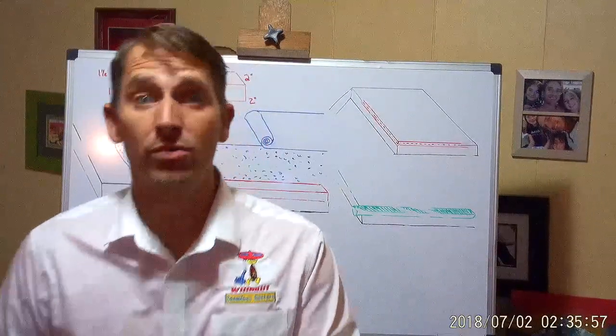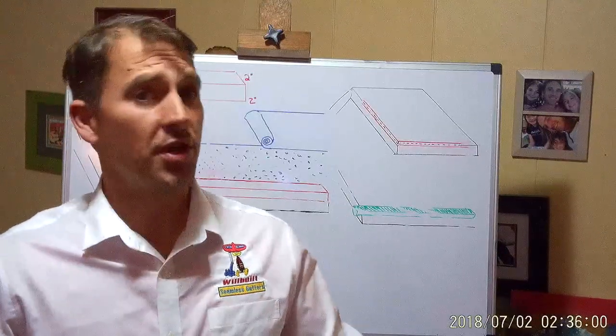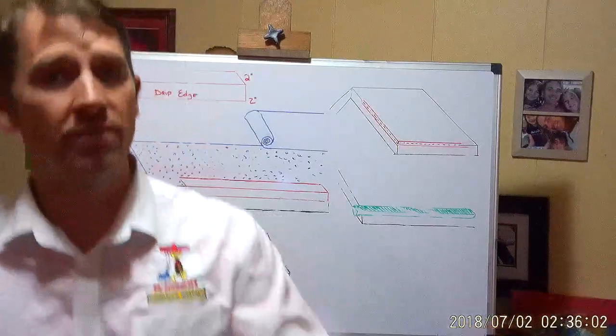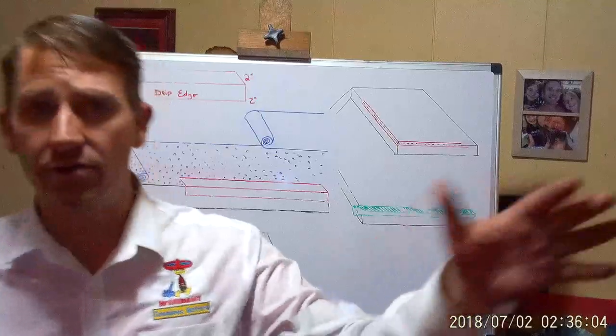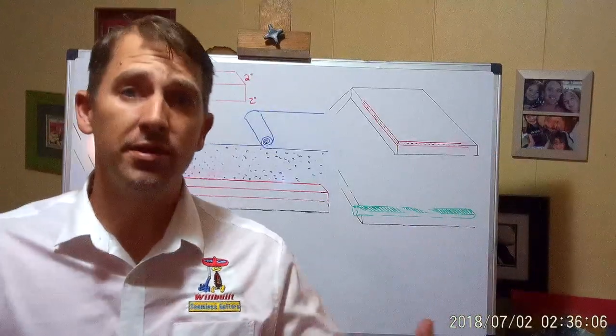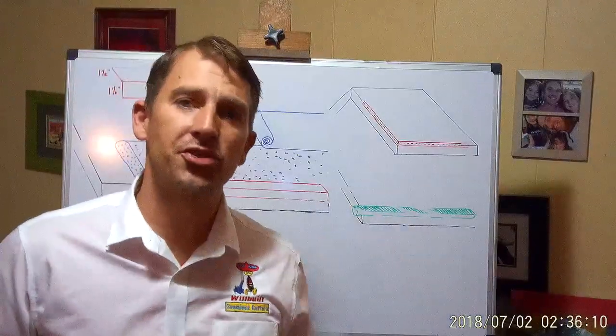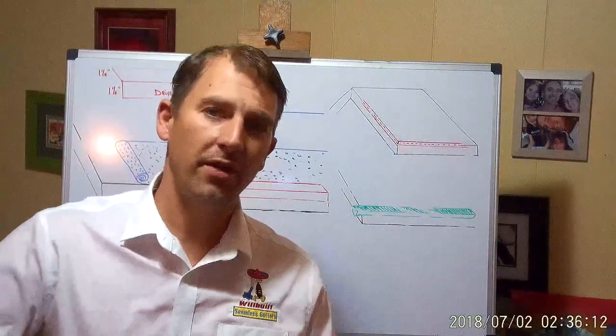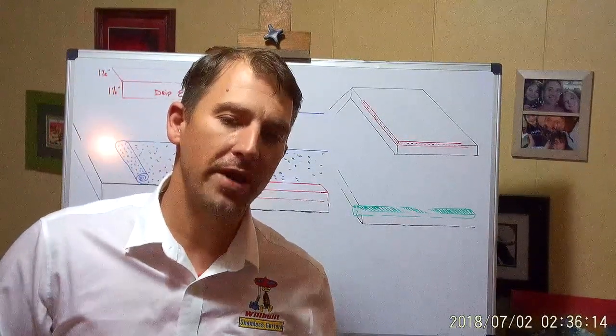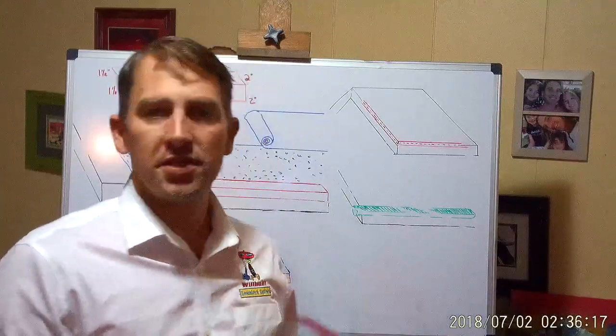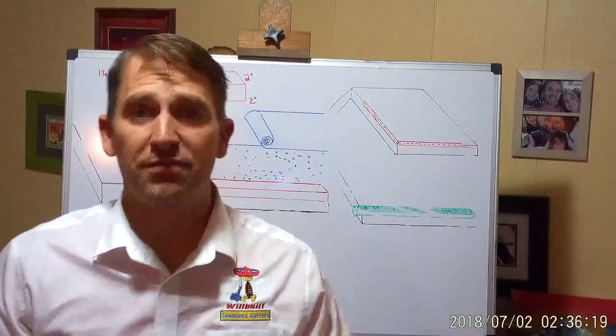Metal roofing is a different animal. It's done differently. You install all of your felt or synthetic underlayment first, then you install your drip edge. They run a mastic strip along the drip edge and they seal your metal roof panels to the drip edge.